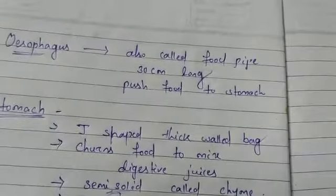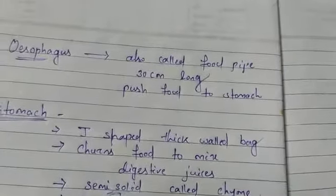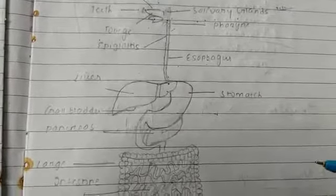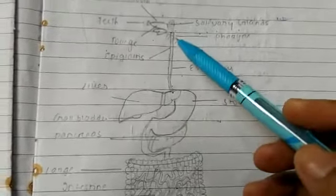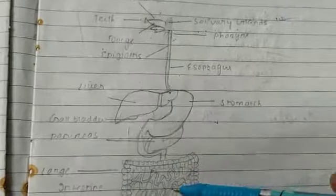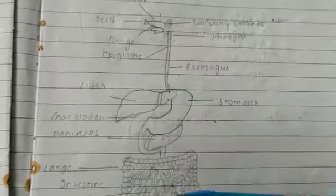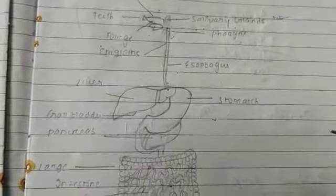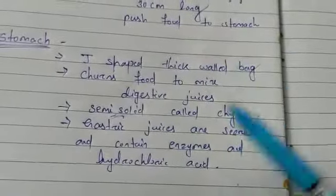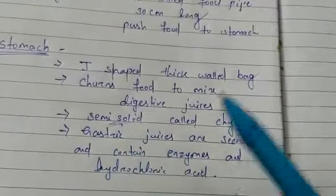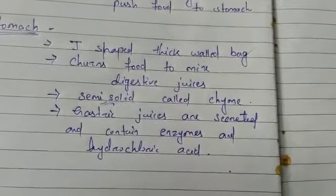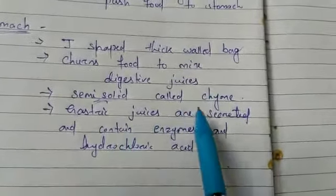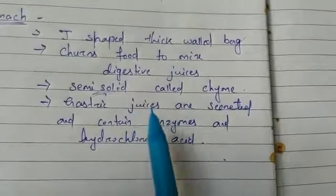The stomach is a J-shaped, thick-walled bag — you can see it in the diagram. It is the widest part of the alimentary canal. One end is connected to the food pipe and the other end is connected to the small intestine. In the stomach, the food is churned to mix with the digestive juices. After churning, the food becomes semi-solid and that semi-solid food is known as chyme.